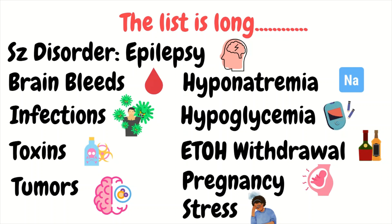Other important causes to keep in mind include hypoglycemia, which is why it is very important to check your blood sugar. You also have hyponatremia, brain bleeds, central nervous system infections like meningitis, or even a brain abscess. Also alcohol withdrawal, toxins, tumors, and even stress. For females of childbearing age, keep in mind that pregnancy has to be ruled out, as certain conditions like eclampsia can lead to seizures.